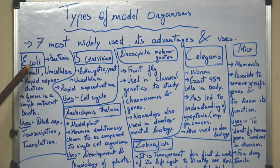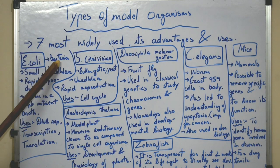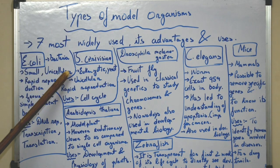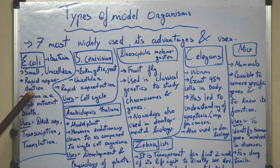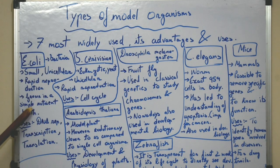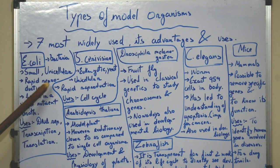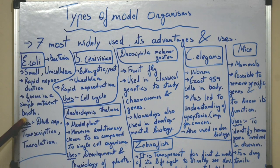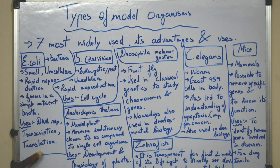So let's talk about the first one: E. coli. E. coli is a bacteria which is small and unicellular. It has a rapid reproduction rate and it grows rapidly in simple nutrient broth — it divides approximately after 20 minutes. So it can be used to study DNA replication, transcription and translation.